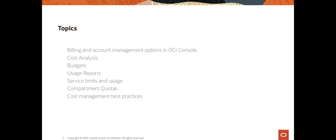What we did in part one was essentially look at the billing and account management options that you can see in OCI console. We looked at the cost analysis tools that gives you trend lines on how your costs in OCI have performed, and you can filter by dates, tags, and compartments. You can use budgets which let you specify soft limits on how much a particular cost tracking tag or a compartment is allowed to use, and you can set up budget alerts so that if the projected cost or actual costs are going to be more than a threshold, you can send a custom email to one or more email addresses.